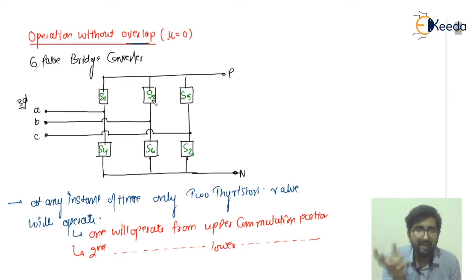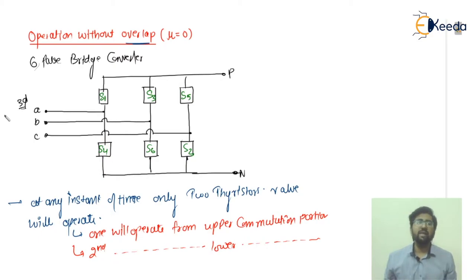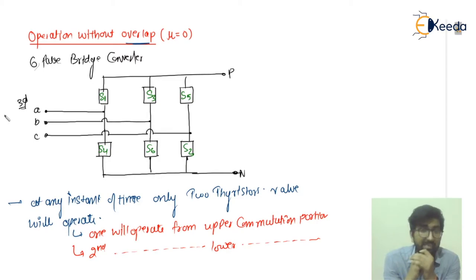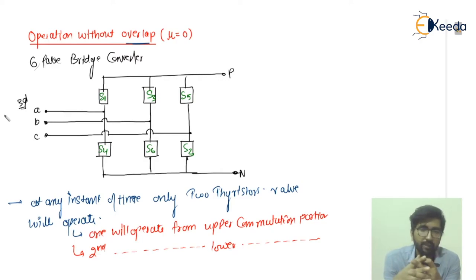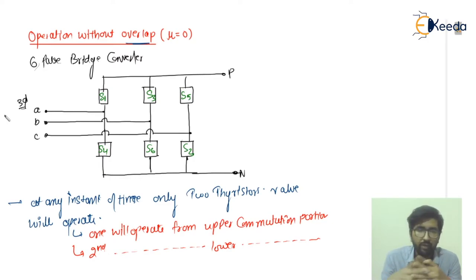For switches S3 and S4, the supply comes from B, goes through switch S3, then from P to N through the load, and comes out via S4. This is how they are connected and numbered accordingly. There is no overlapping here, so we assume voltage is the same and a pure sinusoidal wave is applied.